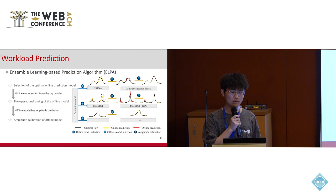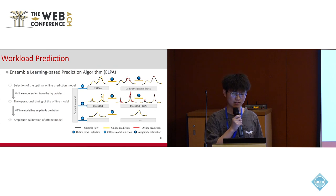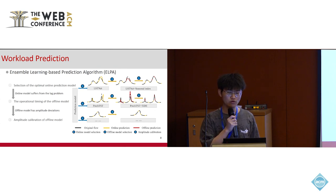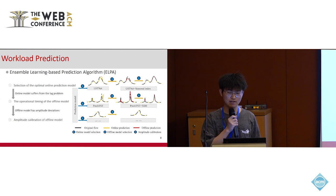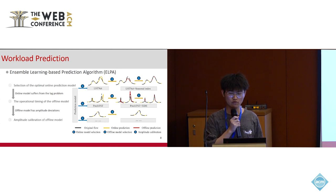However, offline models have amplitude deviations. So in the third step, we do an amplitude calibration, multiplying the predicted value by a factor that is based on the difference between the true value and the predicted value in the past time window.